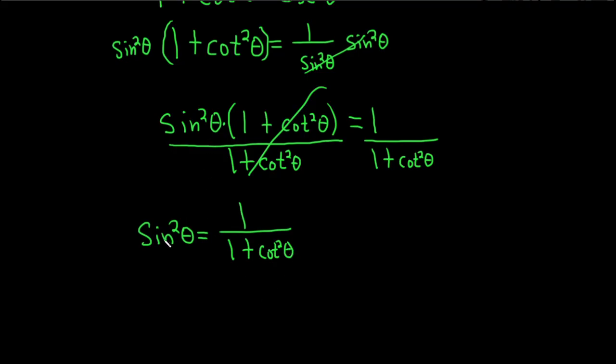We have to solve for sine, so we'll take the square root of both sides. Because we have a variable term that's being squared, it's important to put a plus or minus. So this is ± 1/√(1 + cot²θ).